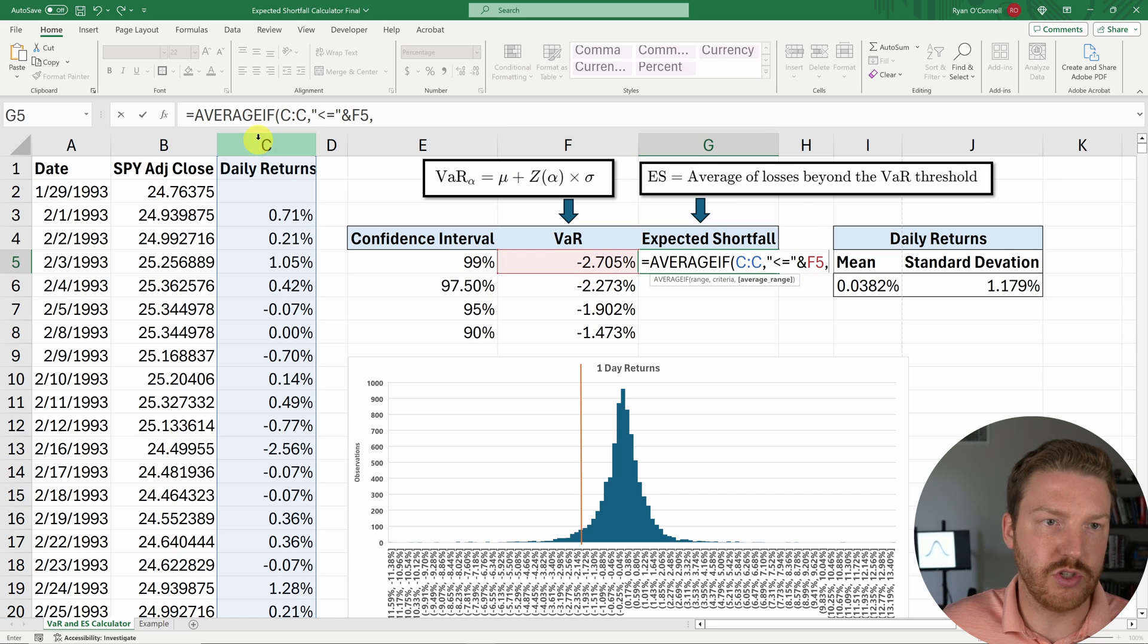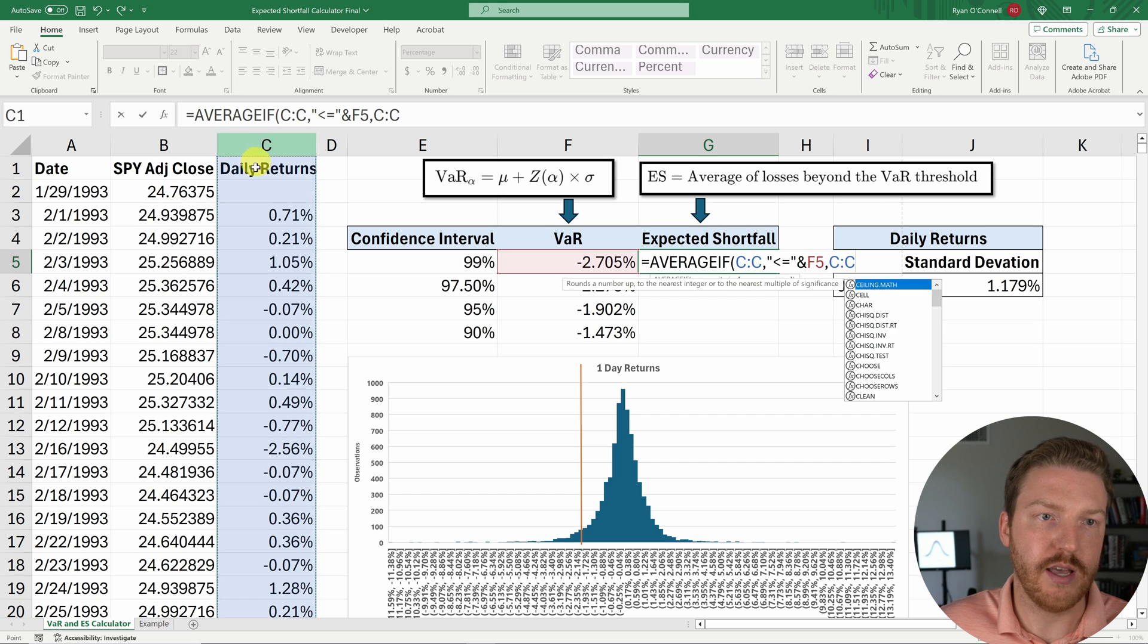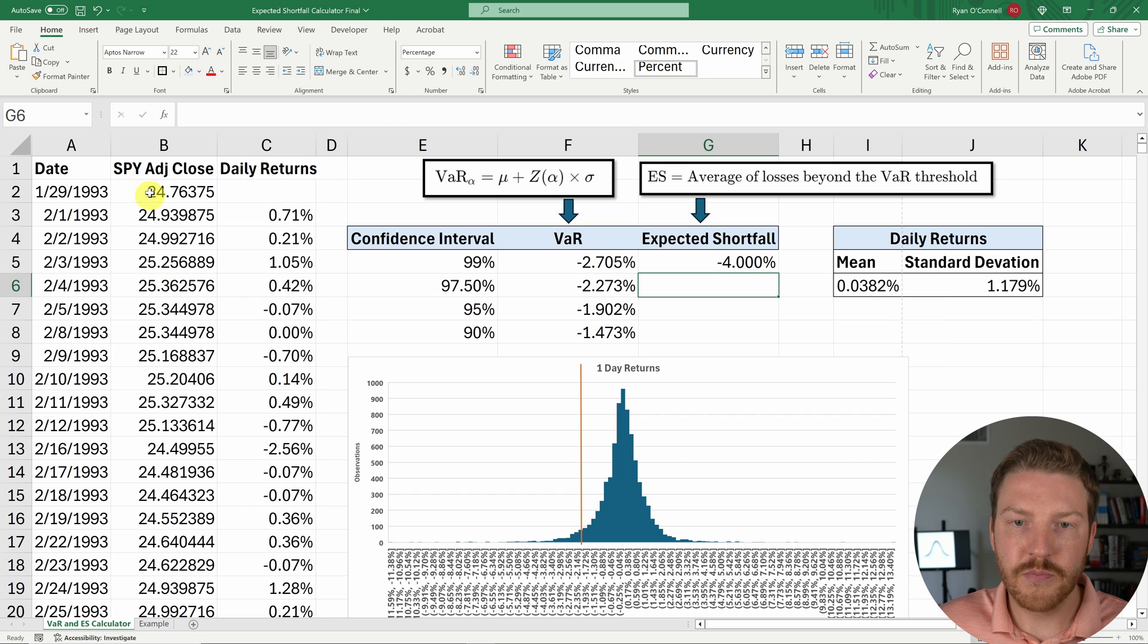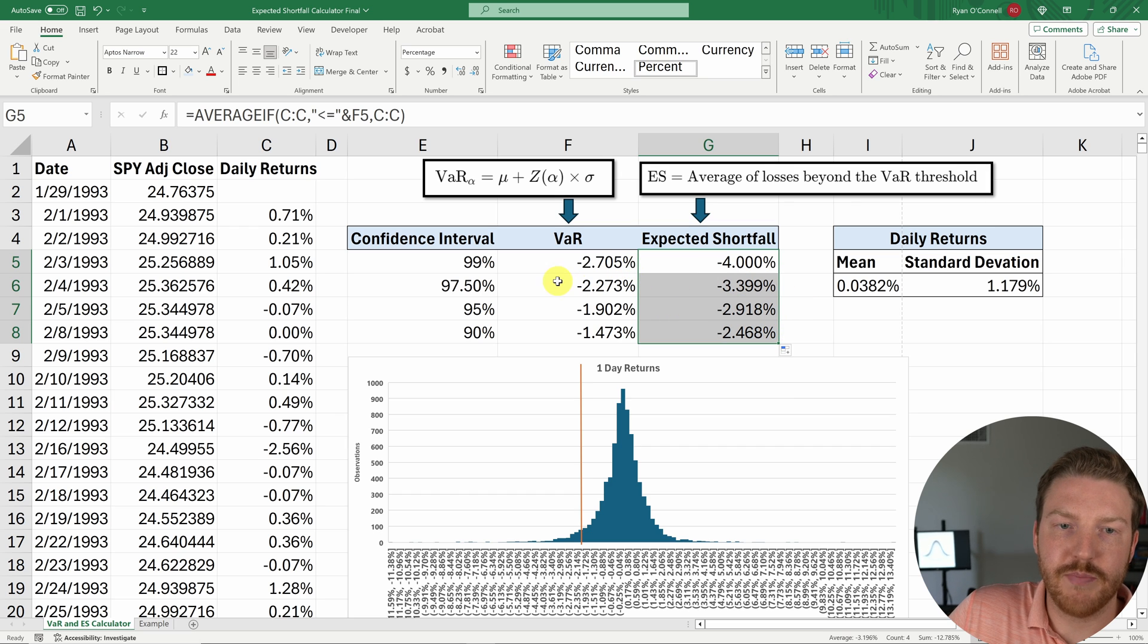And so I can drag this all the way down. And then we'll find our expected shortfall for every single confidence interval.